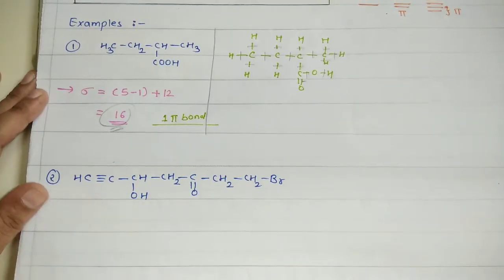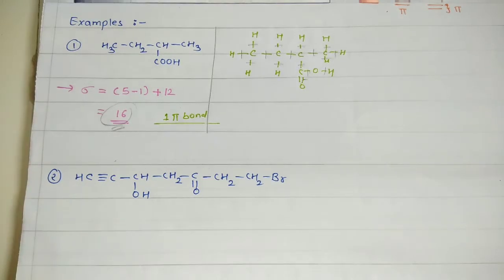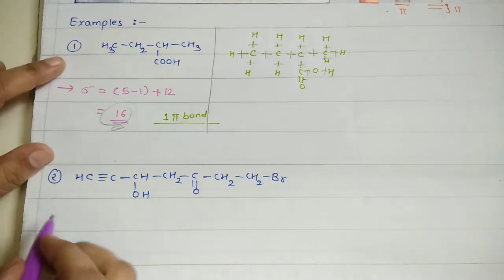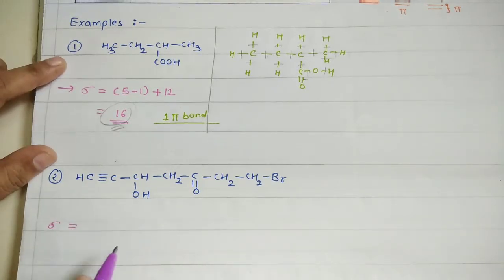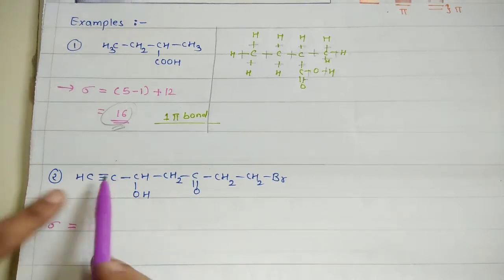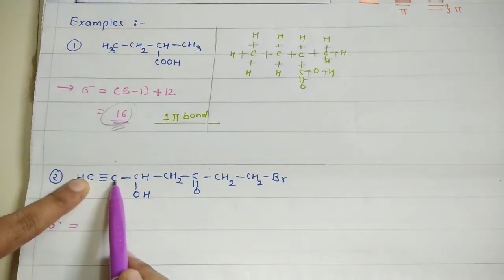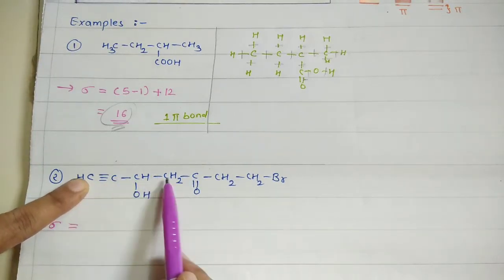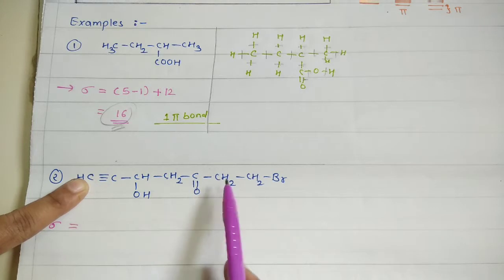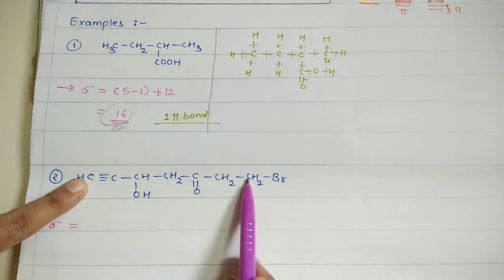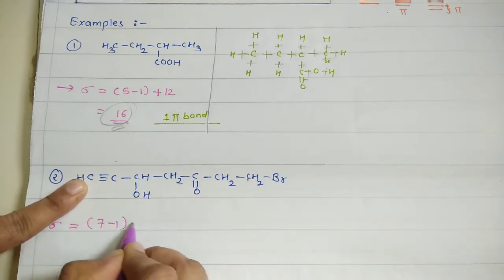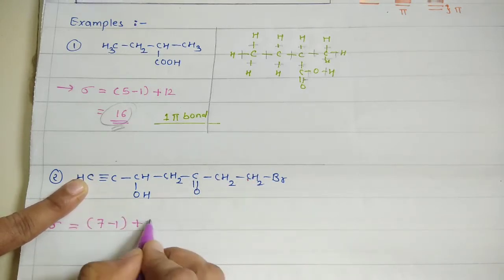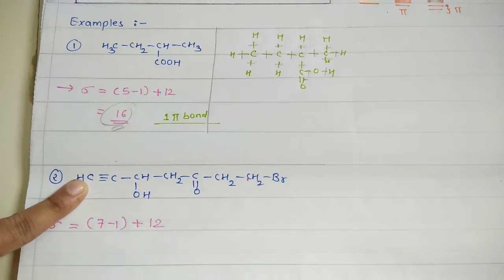Now take a look at the second example. Sigma bonds according to the formula: first calculate the number of carbon atoms — 1, 2, 3, 4, 5, 6, 7 — so 7 carbons. That gives us 7 minus 1. Now count the other atoms — total 12.